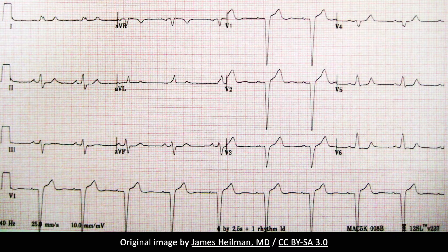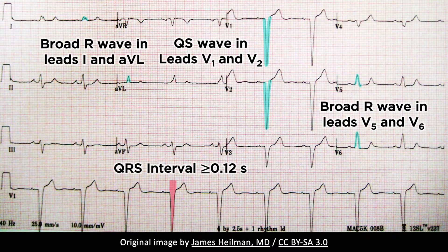Left bundle branch block can result in several ECG findings, including QRS prolongation, broad R waves in left-sided leads, and QS or RS waves in right-sided leads.